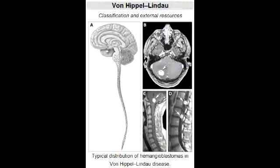What is von Hippel-Landau disease? Von Hippel-Landau disease is a rare autosomal dominant genetic condition that predisposes individuals to benign and malignant tumors. The reason for this is that there is a dominant tumor suppressor gene mutation.